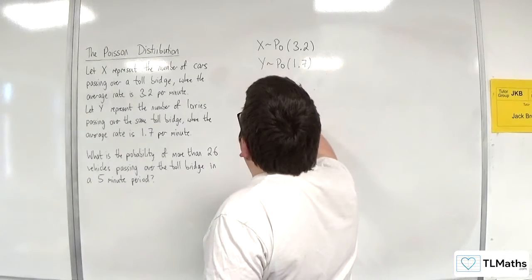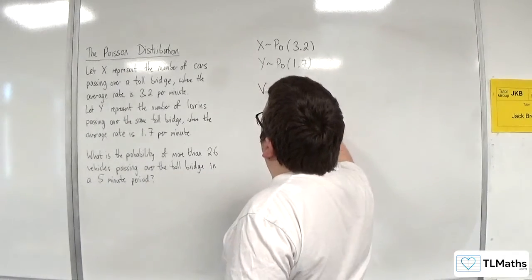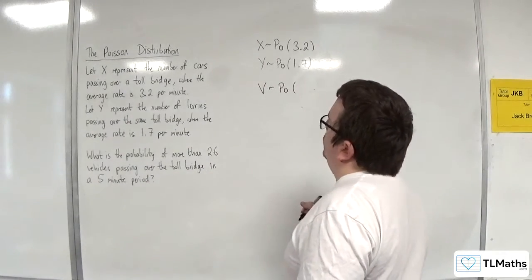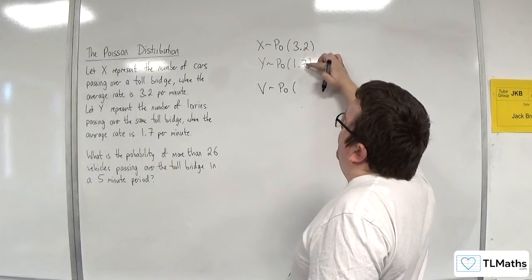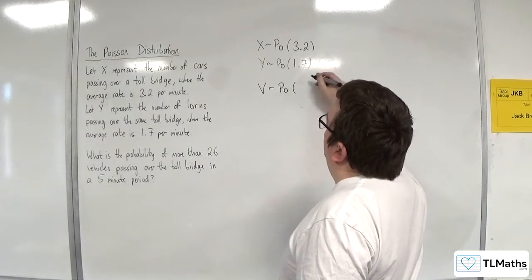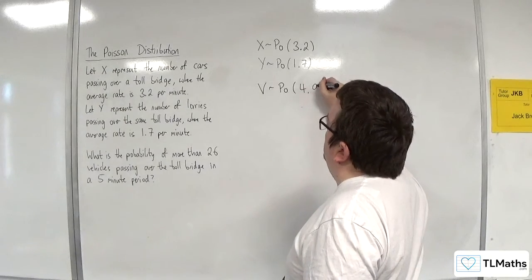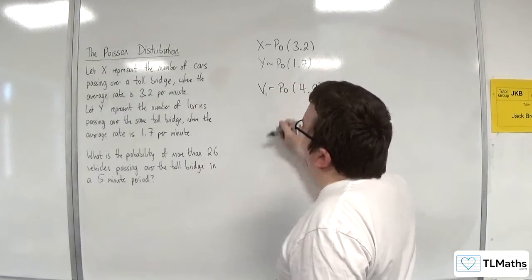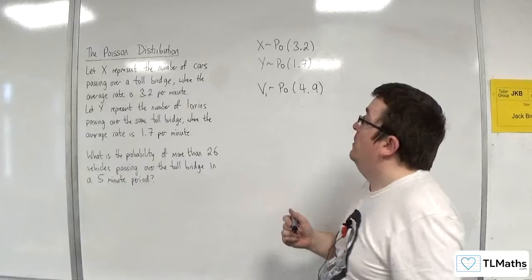So let's say vehicles, V, is a Poisson distribution, where we're now adding the rates together. So we've got the cars and the lorries, and so that would be 4.9. So let's say that's V1, because it's in a 1-minute period.